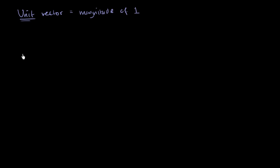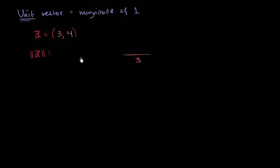Let's take an example. Let's say that I have the vector a. In the horizontal direction, for every 3 that it moves, in the vertical direction, it moves up 4. So let's try to visualize a. For every 3 that we go in the horizontal direction, we're going to go 4 in the vertical direction. And so vector a would look something like that.